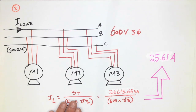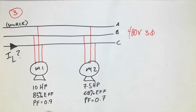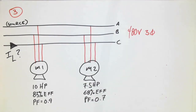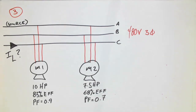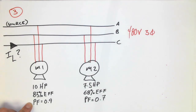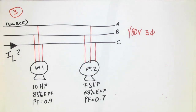Let's look at a third example. The third example is a 480-volt three-phase system with two motors — 10 horsepower and seven-and-a-half horsepower — along with some percent efficiencies and a power factor. Keep in mind that percent efficiency and power factor are two very different distinct items; they are not the same thing. Let's expand on that first and then we'll solve the actual question.